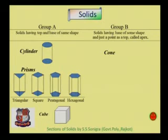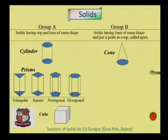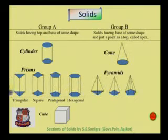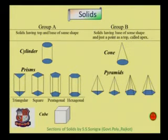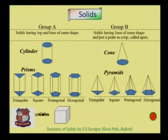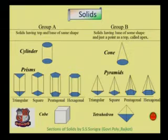Group B consists of solids having a base of some shape and just a point as the top, called the apex. Cone has a circular base joined to an apex point with straight lines. Pyramid has a polygonal face joined to an apex point — it may be a square pyramid, triangular pyramid, pentagonal pyramid, or hexagonal pyramid. Tetrahedron means four triangles joined together, which is called the tetrahedron solid.